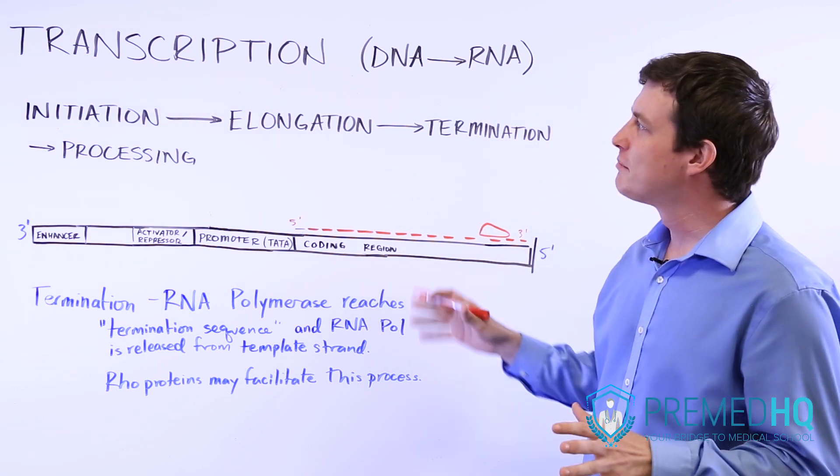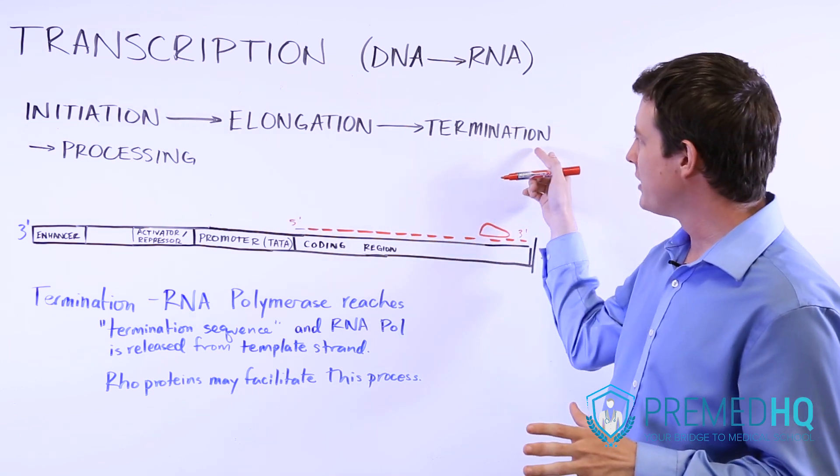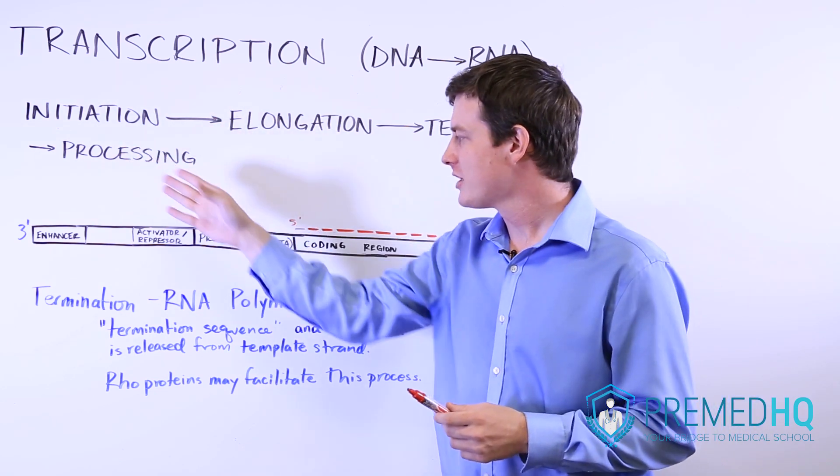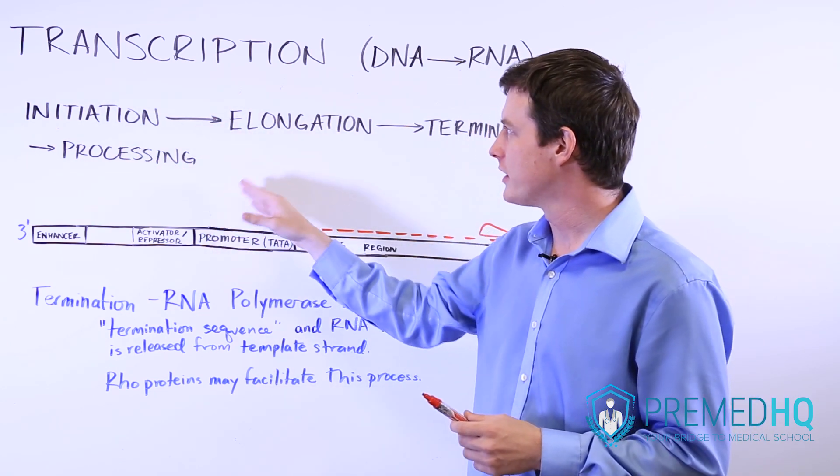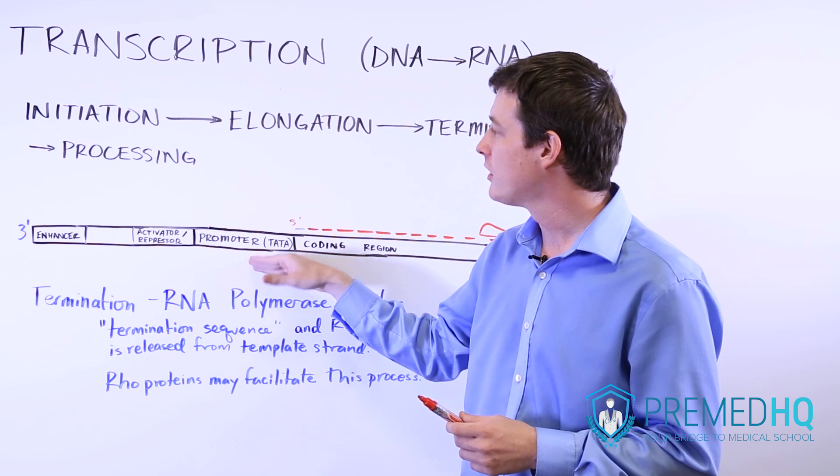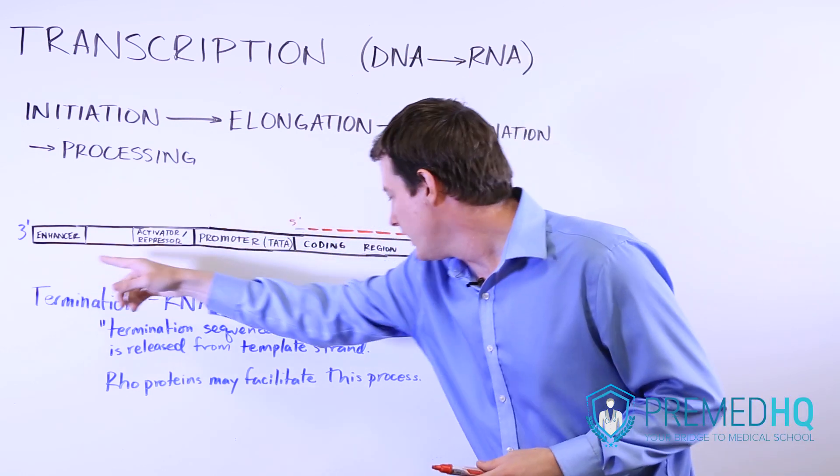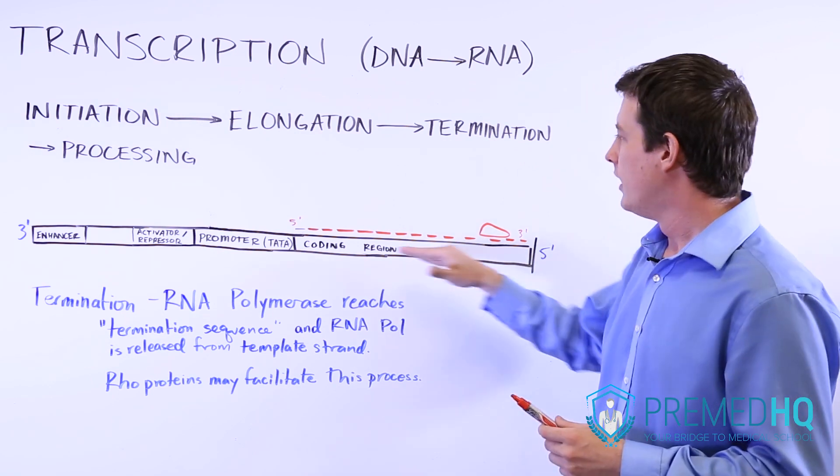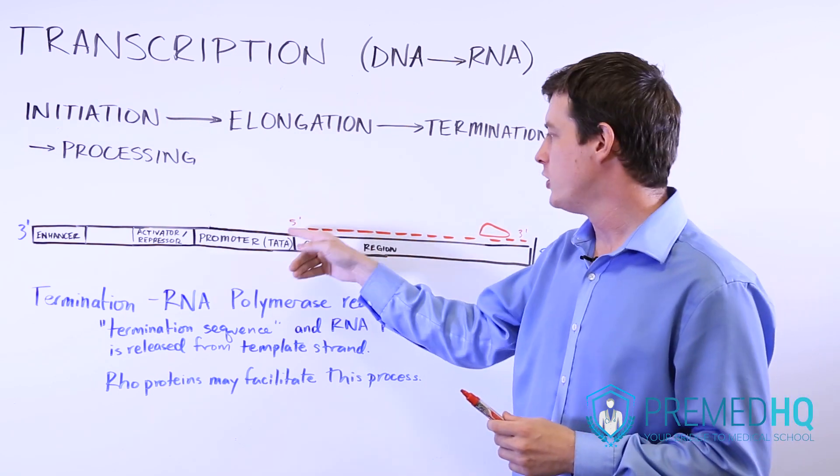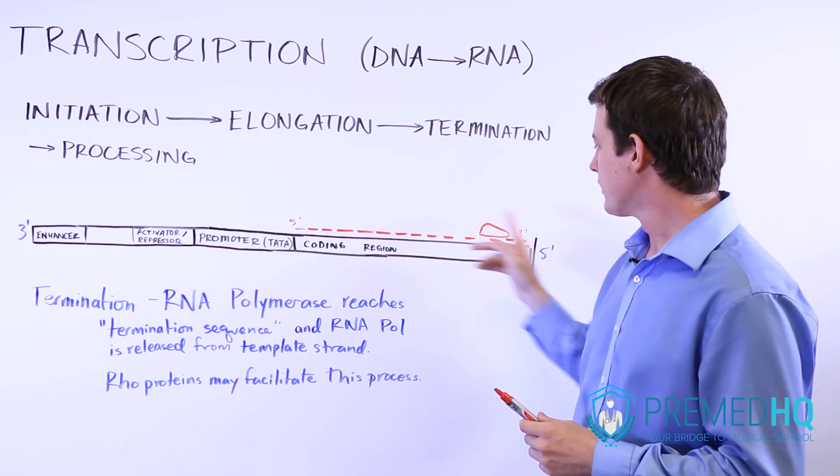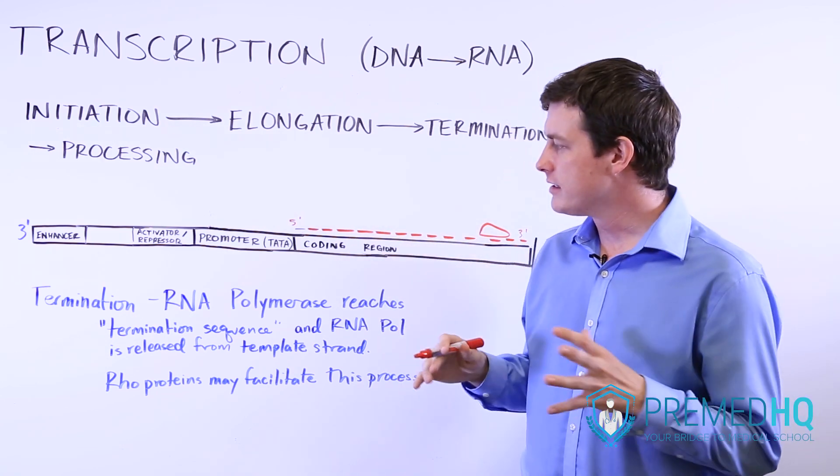So the third step of transcription is the termination phase, and this has occurred after initiation where the various transcription factors bound the promoter, and then the elongation phase where it moved from the three prime end to the five prime end of the DNA and produced new RNA nucleotides in the five to three prime direction. The final step then is